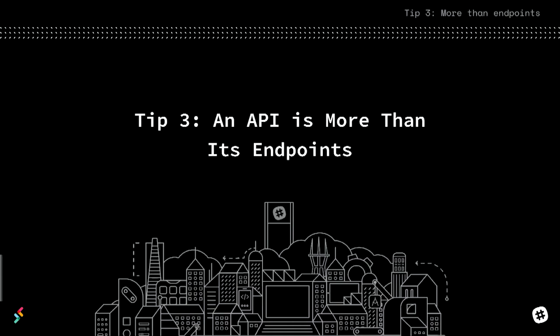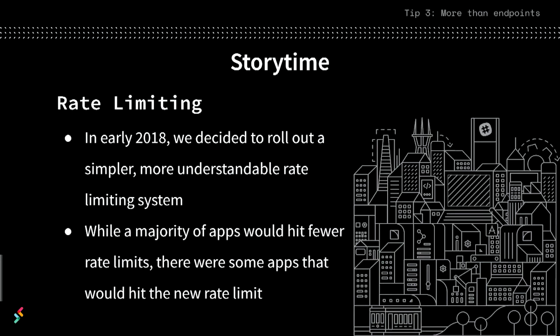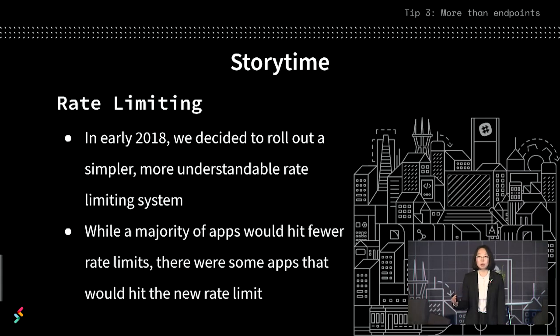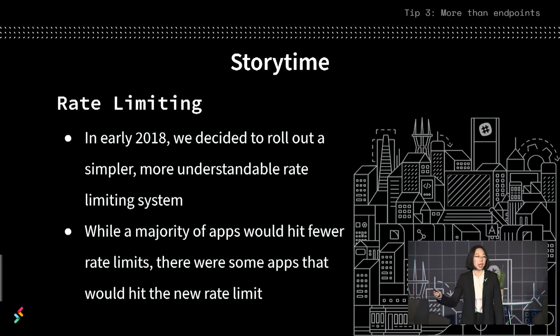Tip number three: an API is more than its endpoints. Earlier this year, we released a new rate-limiting system — a simpler, more understandable system for developers. While a majority of the apps were actually going to hit fewer rate limits, there were some apps that were going to be rate-limited more. Although this isn't considered a change to the inputs, outputs, or effects of an API call, we really had to think about the backwards compatibility implications. Because from a developer perspective, if I'm continuing the same behavior that has always worked, it shouldn't ever break — it would be a really bad experience to all of a sudden get rate-limited for the same amount of traffic.